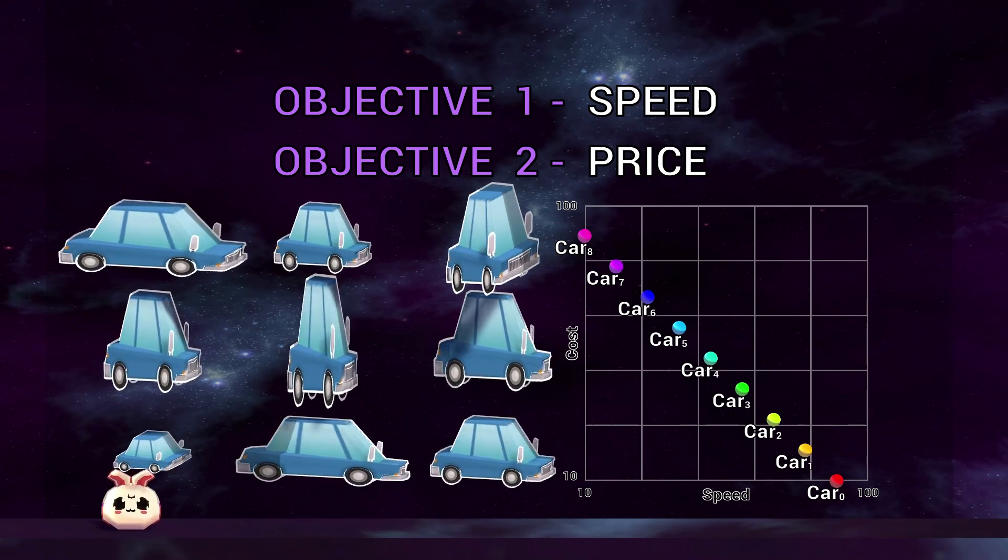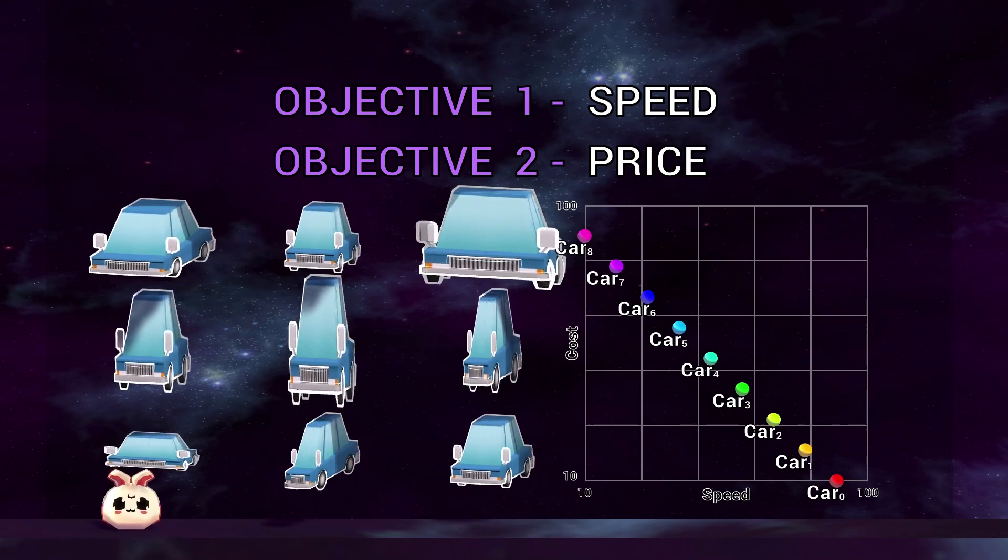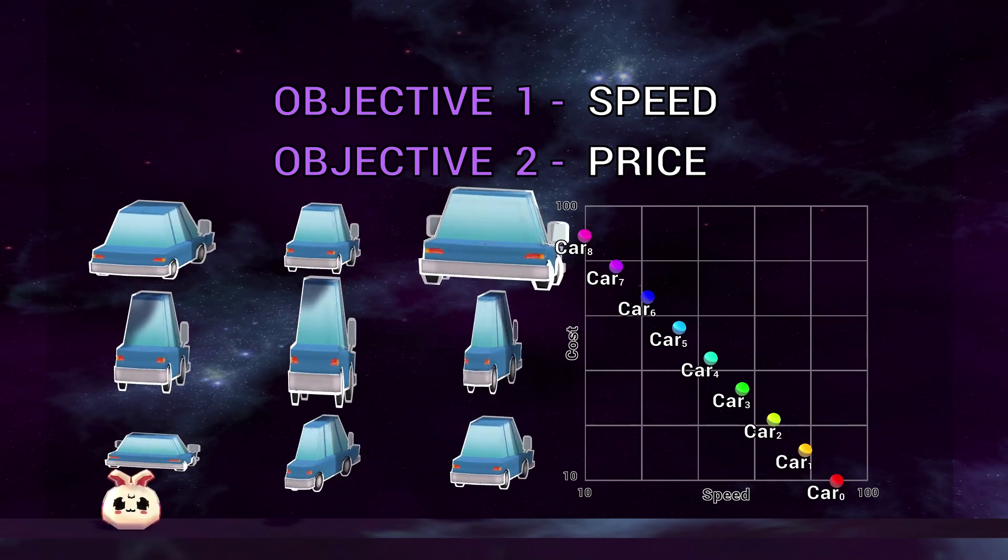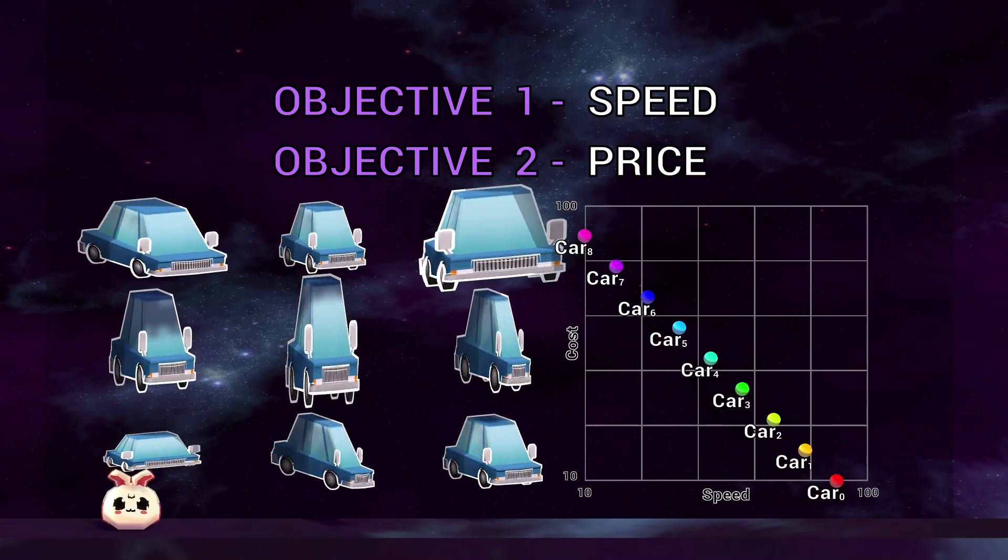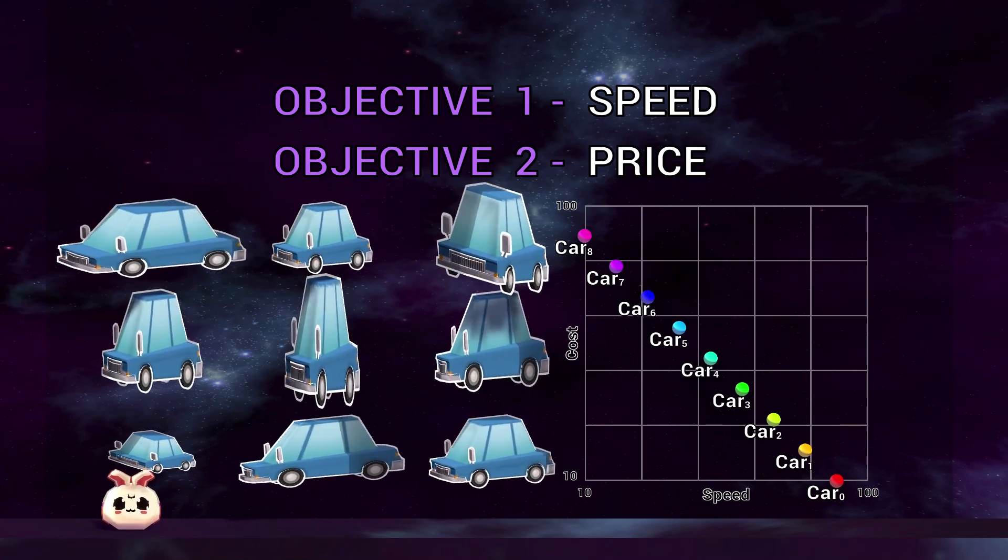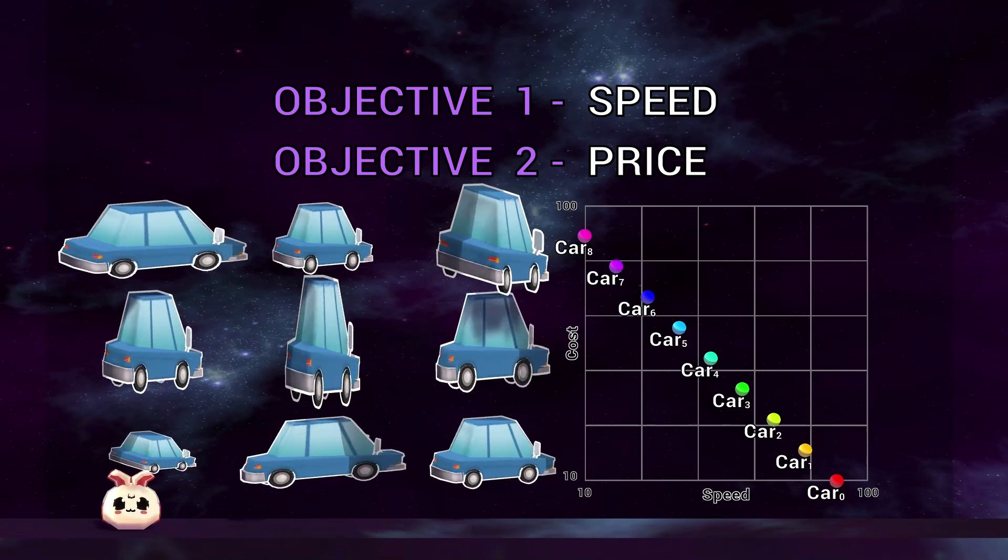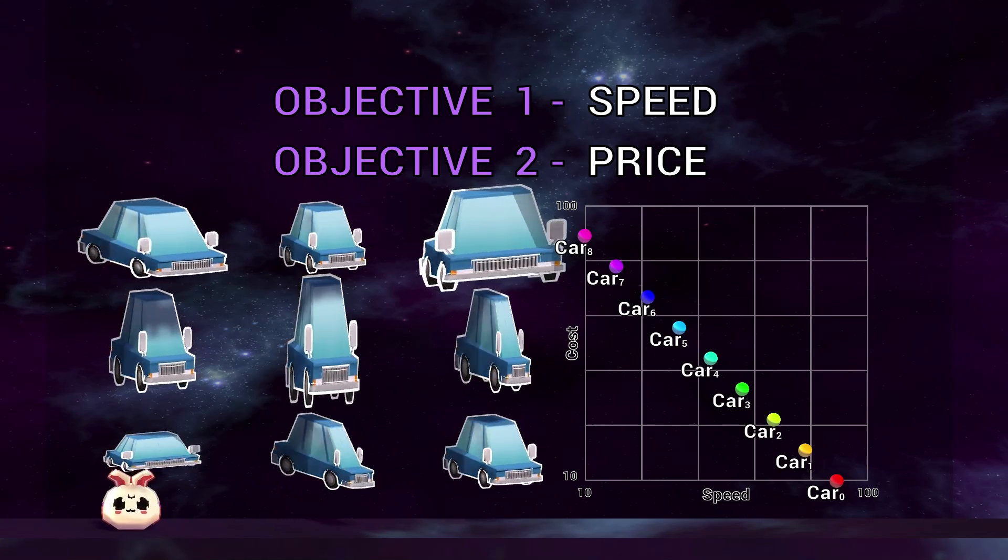So then, a solution to a multi-objective problem isn't a single car design, but instead a set of car designs which offer a trade-off between the objectives. A final solution can then only be selected by an expert in the field.